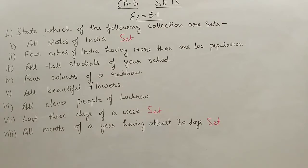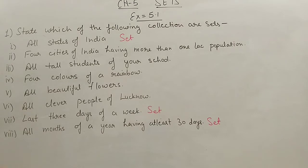Four colors of a rainbow — here they have not mentioned which four colors, because a rainbow has seven colors and this information is not proper, so this is not a set. All beautiful flowers is also not well defined, because maybe one flower is beautiful for one person and not for another. All clever people of Lucknow is also not a well defined set, because 'clever' is not a clear definition.